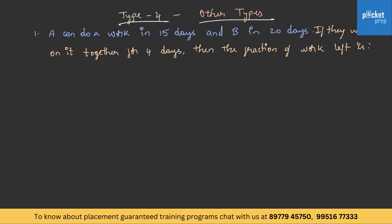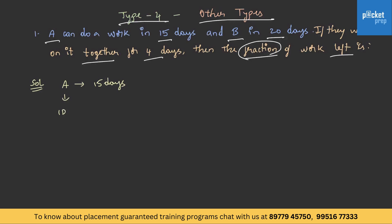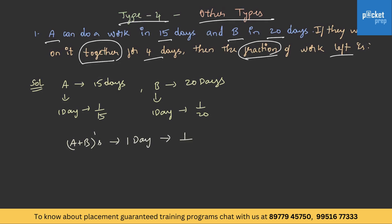Category 3 in time and work is done. Type 4 — other types of questions in time and work. A can do a work in 15 days and B in 20 days. If they work on it together for 4 days, then the fraction of work left is. A's part of work in 1 day is 1 by 15 and B's is 1 by 20. A plus B's one day work equals 1 by 15 plus 1 by 20, which equals 7 by 60. For 4 days it is 7 by 60 into 4, which equals 7 by 15.